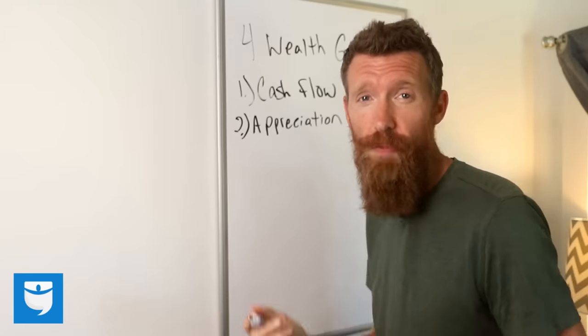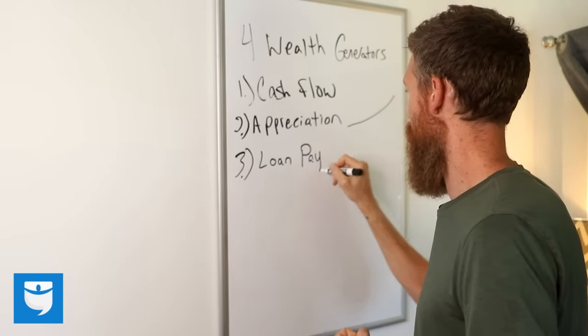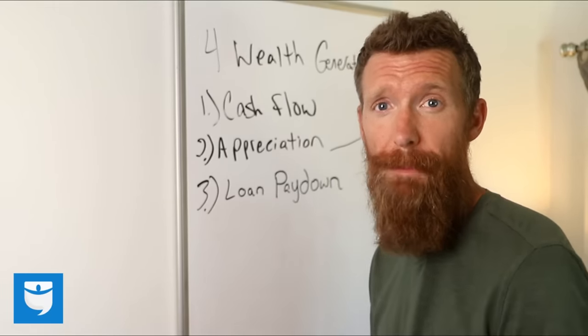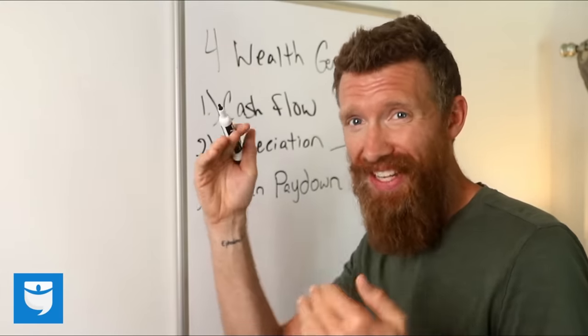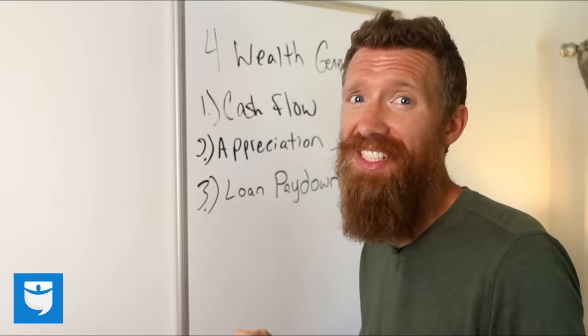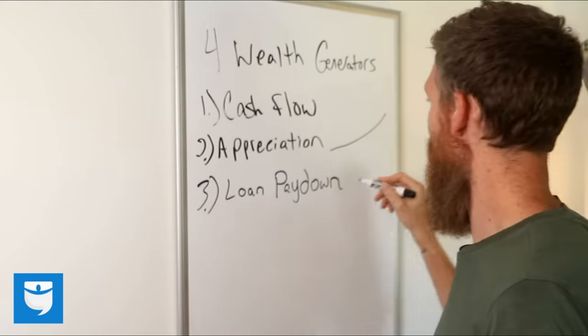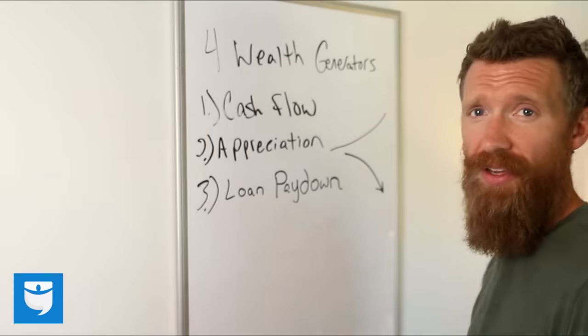Now, number three, the loan pay down. Normally when you buy a piece of real estate, you get a loan from a bank, which you then pay every month. But the cool thing is over time, the loan then gets paid down, which means you might start owing, let's call it 200 grand, but eventually you'll owe nothing, right? So the loan starts here and over time tends to drop on what you owe it.